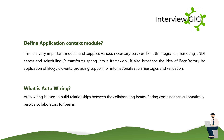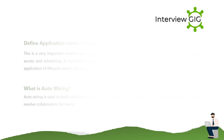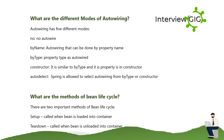What is auto-wiring? Auto-wiring is used to build relationships between collaborating beans. The Spring container can automatically resolve collaborators for beans. Auto-wiring has five different modes.